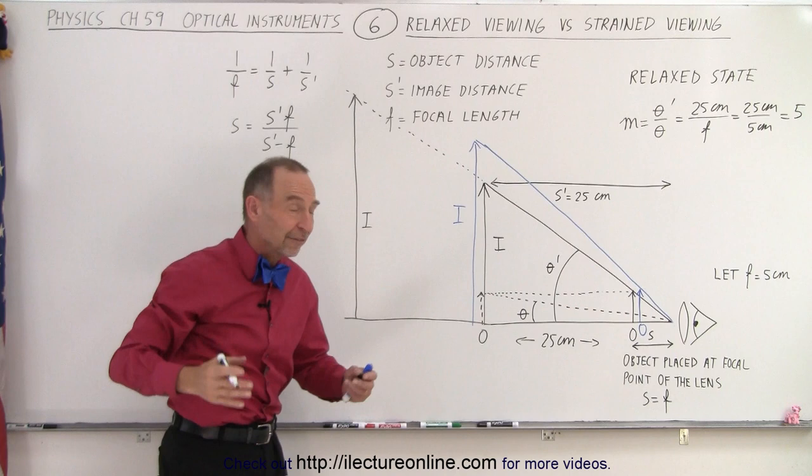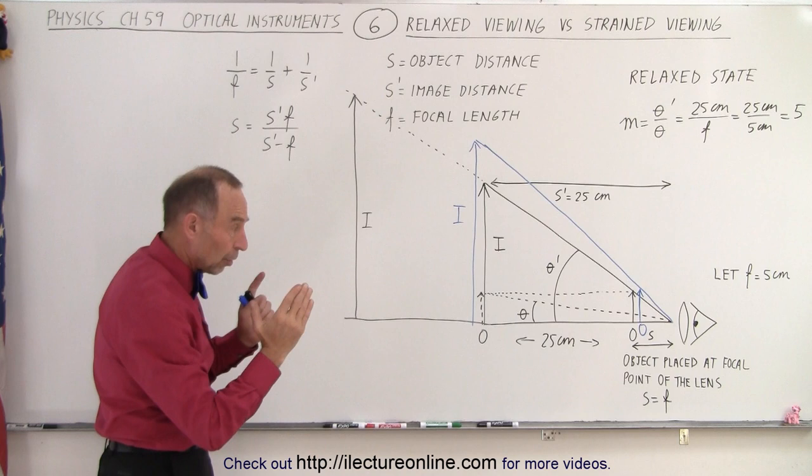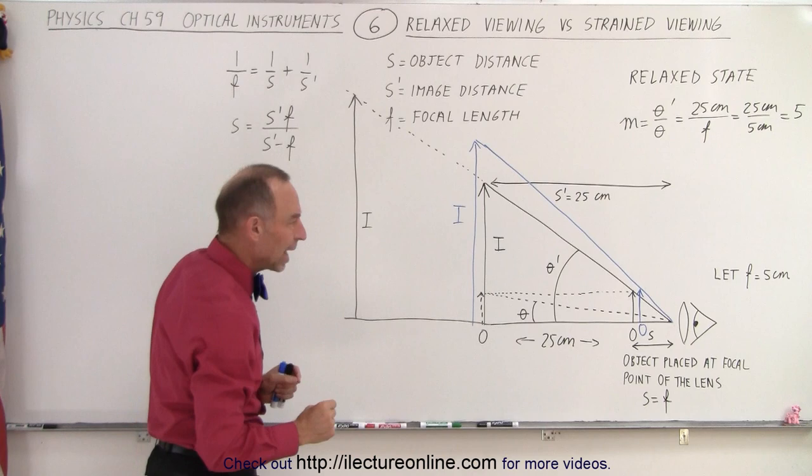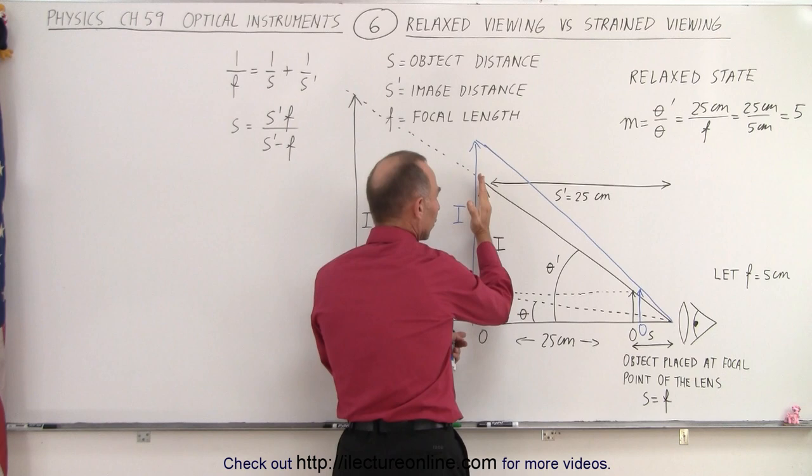But what we could do instead is we could move the object a little bit closer inside the focal point of the lens, a shorter distance than the distance to the focal point. If we do that, you can see then that you'll get a larger magnification. Then if you bring the image to the distance 25 centimeters away, you can see that you now have a larger image at that location than you had before. Simply by putting the object a little bit closer.